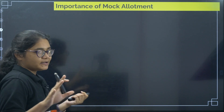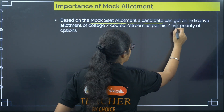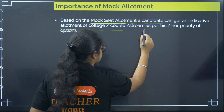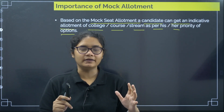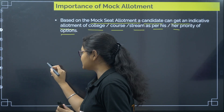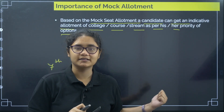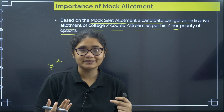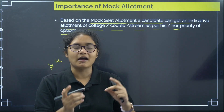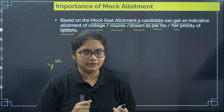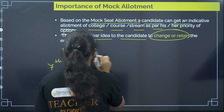Now, the importance of mock allotment — why is it important? Based on the mock seat allotment, a candidate can get an indicative allotment of college, course, and stream as per his or her priority of options. You will have an idea that if you arrange your options in a certain way, you are getting, say, the 7th college in your list. But if you are not very much interested in the 7th college, this gives a clear idea to change or retain the entered options.